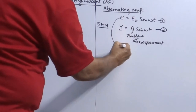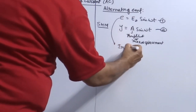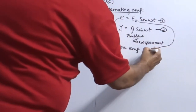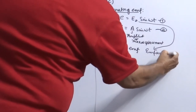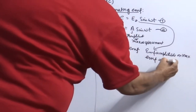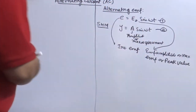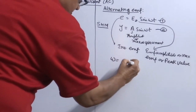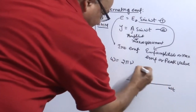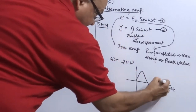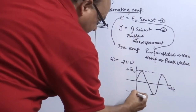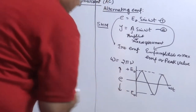E is termed as instantaneous EMF — EMF at any time. E₀ is similarly termed as EMF amplitude, or maximum EMF, or peak value of EMF. Omega has its own significance: 2πν, where ν is the frequency. When you plot a graph, because the equation is identical to the simple harmonic equation, the graph will be exactly the same — showing maximum EMF of +E₀ and minimum of −E₀.